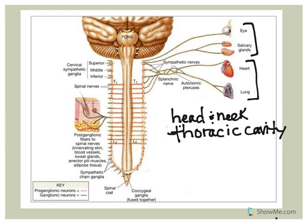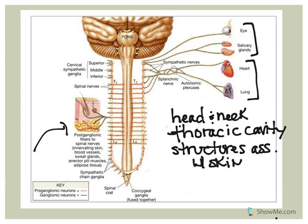Also, structures associated with your skin, such as sweat glands and erector pili muscles. Another target would be blood vessels. So the sympathetic trunk ganglia axons are going to innervate structures in the head and neck, structures in the thoracic cavity, and structures associated with your skin as well as blood vessels.